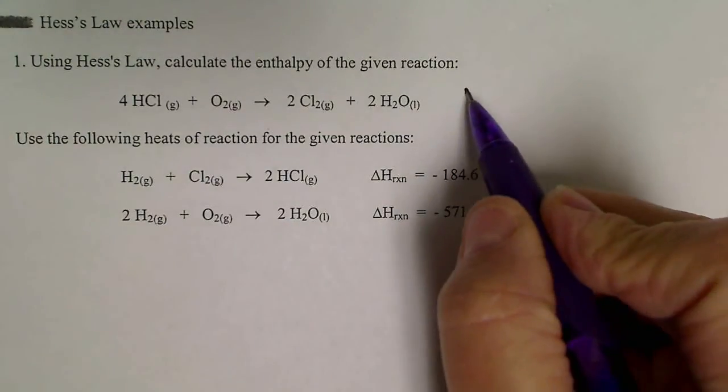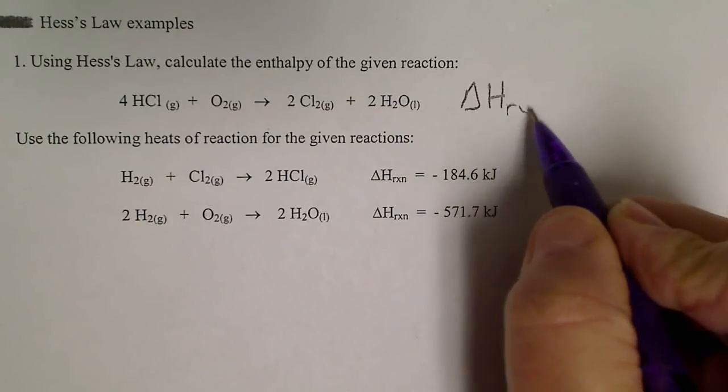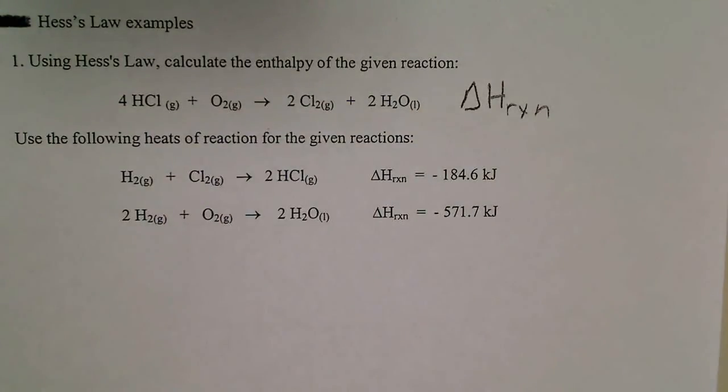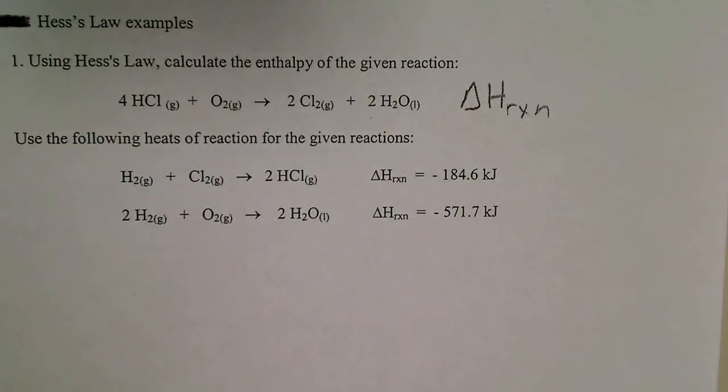So assume that we are trying to find the enthalpy change for this given reaction. And we could use the heats of formation from the back of the book and take products minus reactants to calculate that.